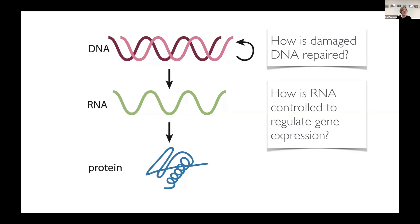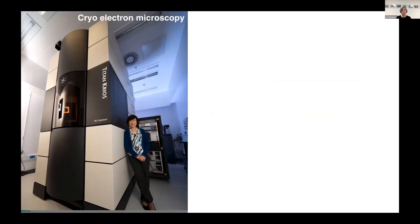A major aim of our work is to visualize proteins — specifically those that control DNA repair and RNA — so that we can understand how they work. To visualize them, we use cryo-electron microscopy, or cryo-EM. The proteins that we look at are on average 20 nanometers in size, or in other words, they're 10,000 times smaller than the diameter of human hair. Another way to think about this is that the difference in the size of a human compared to the sun is about the same as the difference in the size of a protein compared to a human.